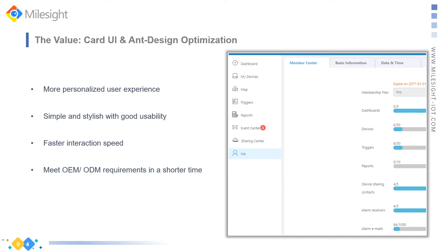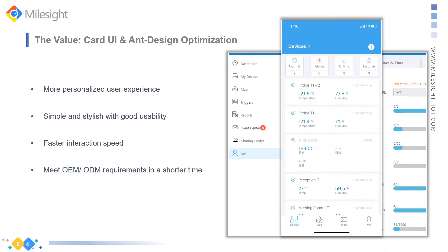The new Myosight IoT Cloud version 2 provides an all-new user interface based on the professional card UI and end design. What we have done at first is the backend. Compared to the previous traditional UI design, a simple but intuitive advantage of card UI is it provides a more personalized user experience.